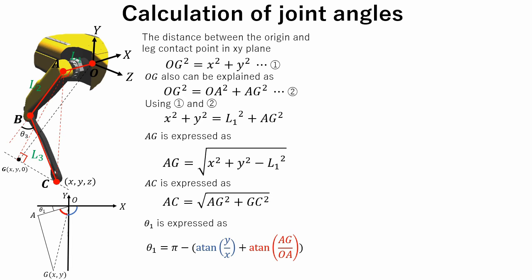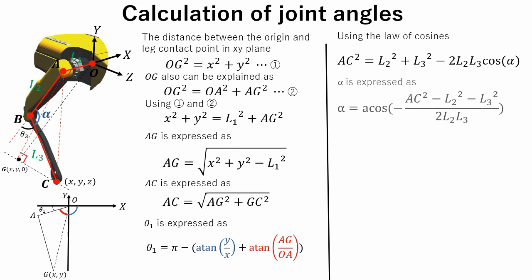Now we are going to find out theta 3. Theta 3 can be found out by subtracting angle alpha from pi. Using the law of cosines, we obtain the next formula. Transforming this equation in respect to alpha, alpha is expressed like this. So, theta 3 can be obtained by subtracting alpha from pi.